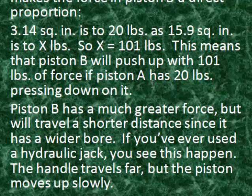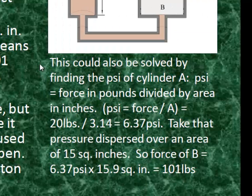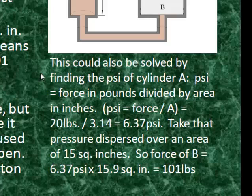If you've ever used a hydraulic jack, you see this happen. The handle you use to lift a vehicle or other piece of machinery moves very far, but the piston moves up slowly. This force problem could also be solved by finding the PSI of cylinder A. Pounds per square inch equals force in pounds divided by area — that is 20 pounds divided by 3.14 square inches, which equals 6.37 PSI. Taking that pressure over an area of 15.9 square inches, the force on piston B equals 6.37 PSI times 15.9 square inches, and you still get 101 pounds.